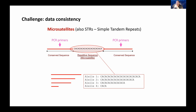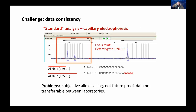Another challenge is data consistency. If we're talking about monitoring, the data 20 years down the road must be comparable with the data we're collecting right now. One of the most commonly used markers are microsatellites — they're hypervariable with high information content and can be readily detected in non-invasive samples, making them decent markers. The problem is the way they've been standardly analyzed through capillary electrophoresis, which is plagued with serious problems — the main one being subjective allele calling.